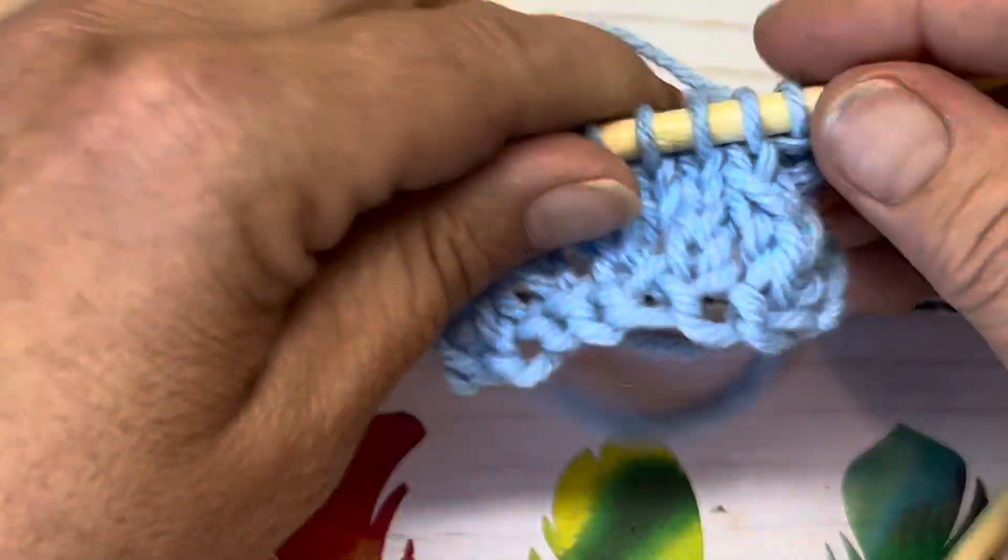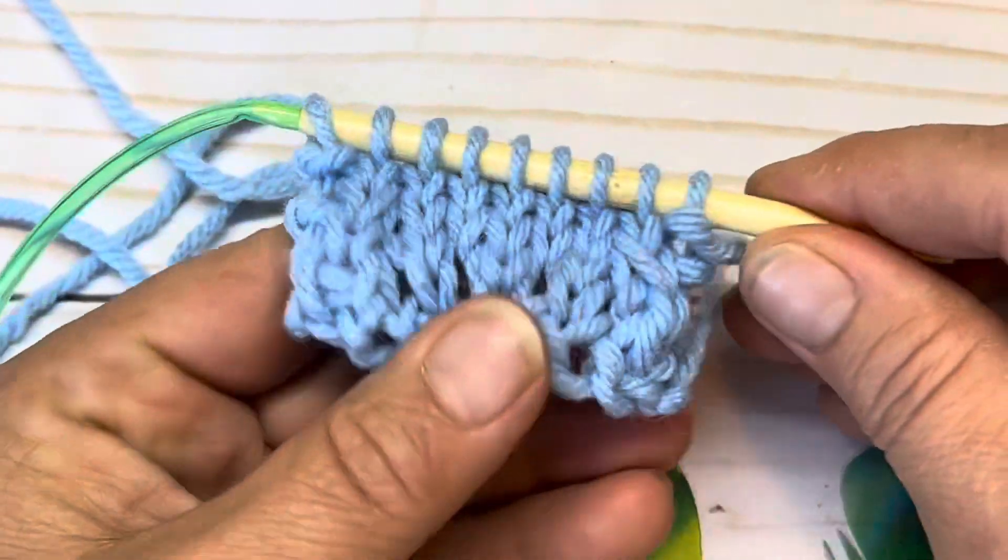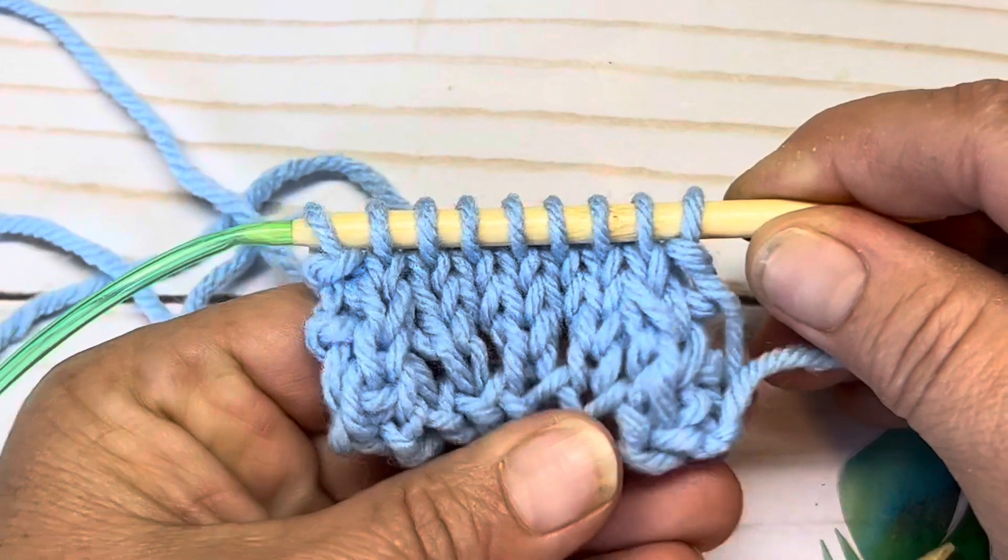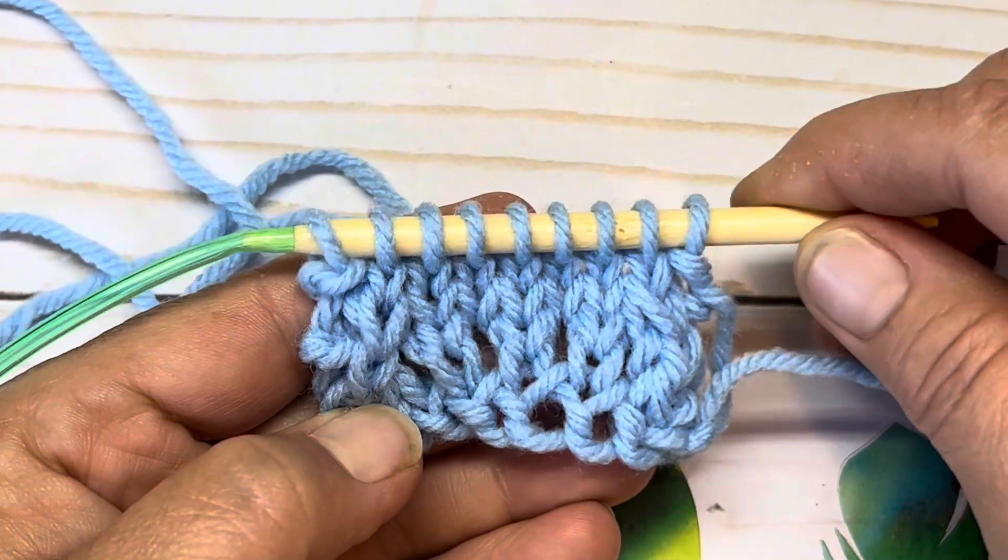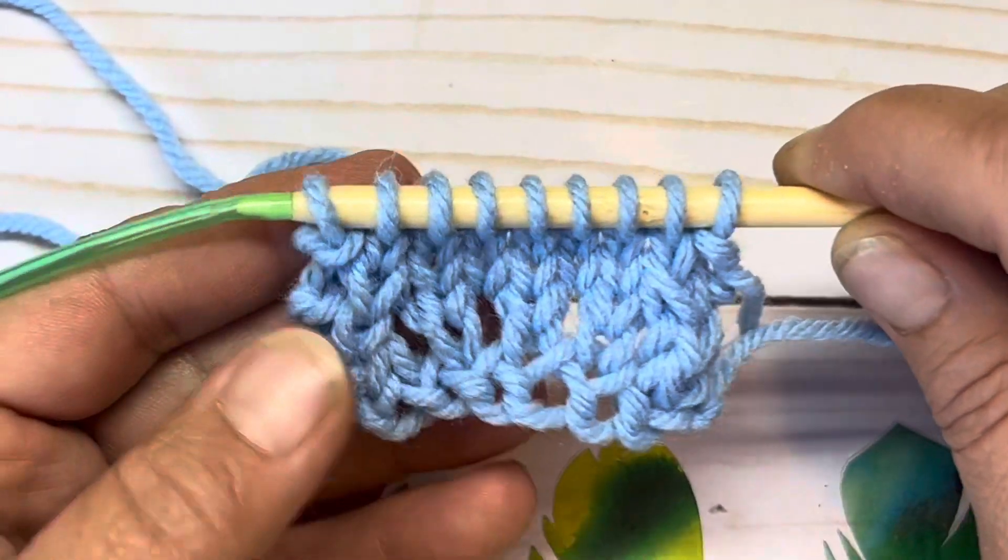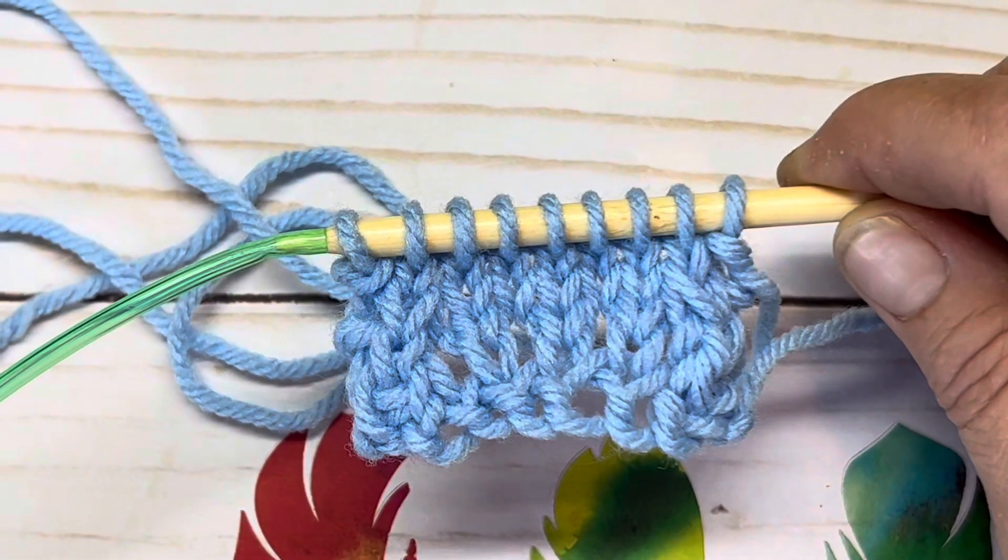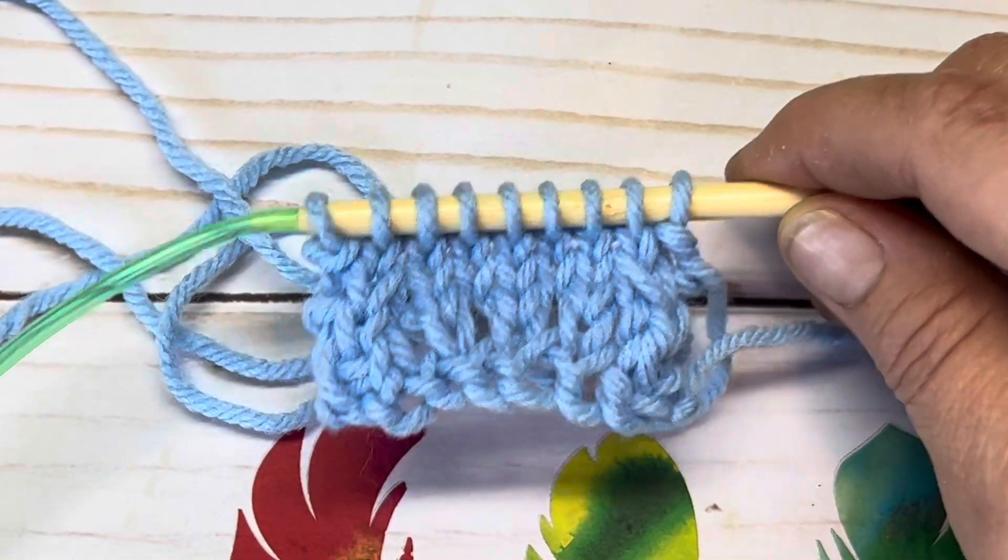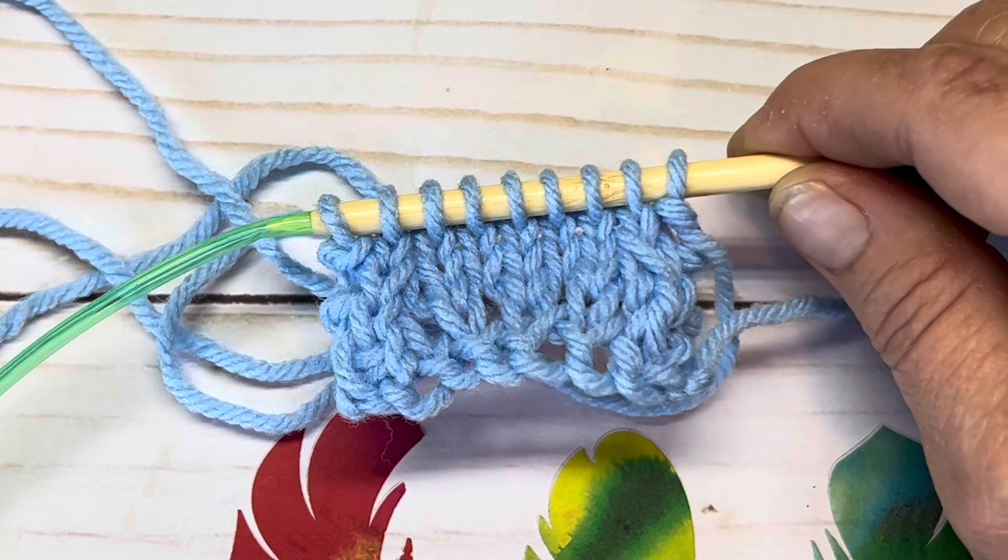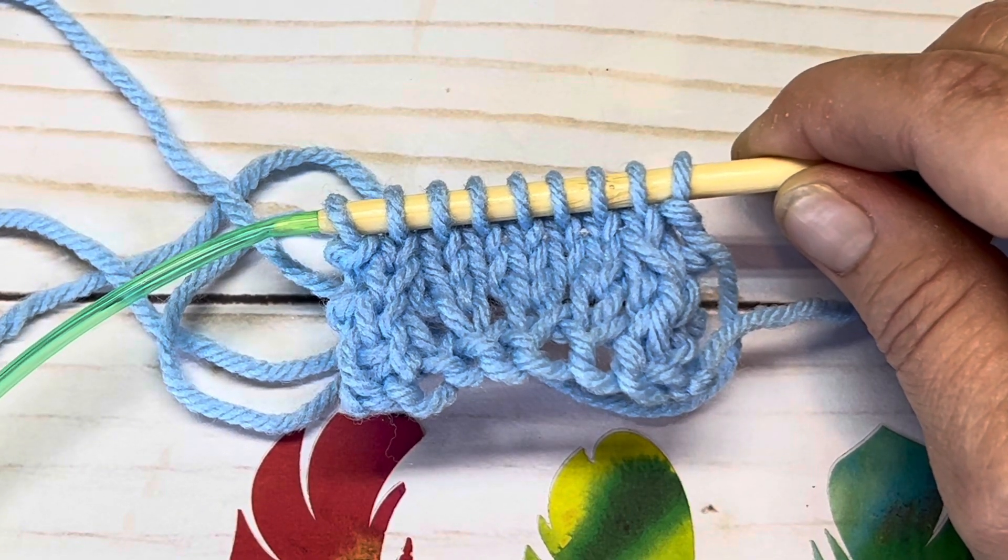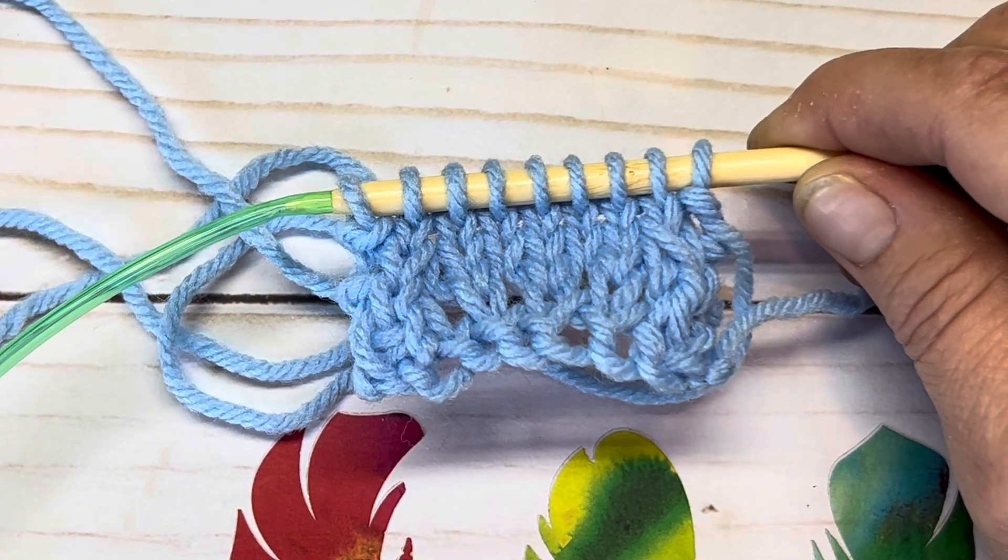And that is your repeat rows, rows one through four. You will continue to repeat rows one through four for whatever length you so desire. I hope that you've enjoyed this tutorial. Be blessed, be a blessing, and until next time, bye for now.